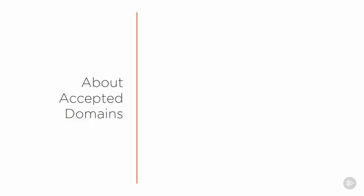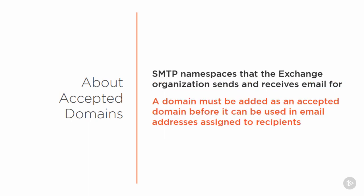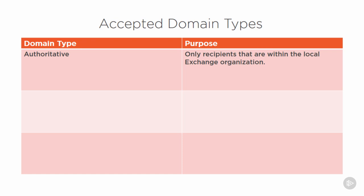Accepted Domains are the SMTP namespaces that an Exchange organization is able to send and receive email for. One thing to keep in mind is that a domain must be added as an accepted domain before it can be used in email addresses that are assigned to recipients. There are three types of accepted domains. Authoritative Domains are those that the Exchange organization is solely responsible for. Exchange will only deliver emails to local recipients for authoritative domains.